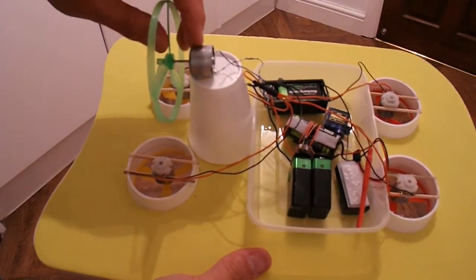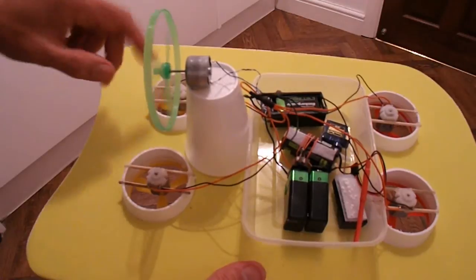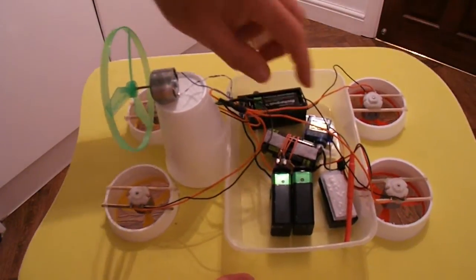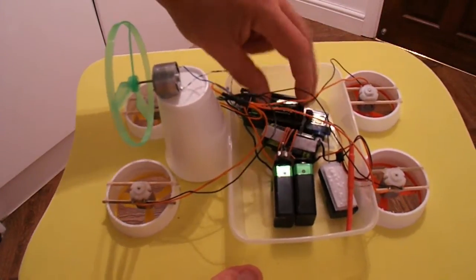And then this electric motor comes out of a, I think it's a floppy disk drive, it might be a hard drive. Well it's a DC motor, it says 9 volts on it, so I'm running it on 9 volts as well.